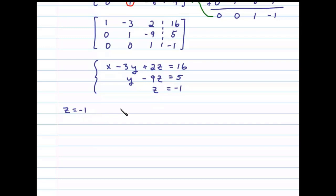Now we'll use that in the second equation to determine y, and so here we'll substitute z equals negative 1 and then solve. So we have y plus 9 equals 5, y equals then negative 4.